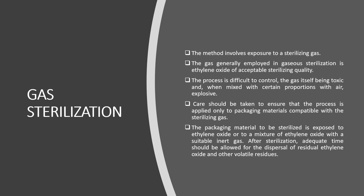The third method is gaseous sterilization. This involves the use of gases like ethylene oxide, which has acceptable sterilizing quality. The process is difficult to control since the gas itself is toxic and when mixed with certain proportions of air becomes explosive. Care should be taken to ensure the process is applied only to packaging material compatible with the sterilizing gas. The packaging material to be sterilized is exposed to ethylene oxide or to a mixture of ethylene oxide with a suitable inert gas. After sterilization, adequate time should be allowed for the dispersal of residual ethylene oxide and other volatile residues. However, this method is not as efficacious as compared to the hydrogen peroxide method combined with UV.